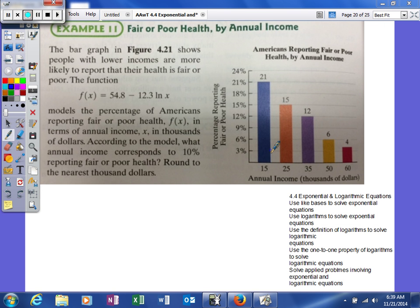Okay, here's our new example. The bar graph in this figure shows people with lower incomes are more likely to report their health is fair or poor.